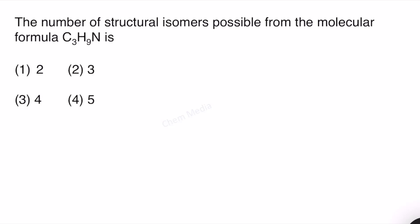The number of structural isomers possible from the molecular formula C3H9N is how many? Let us first determine the degree of unsaturation to find out whether this particular elemental composition contains double bonds, rings, etc.